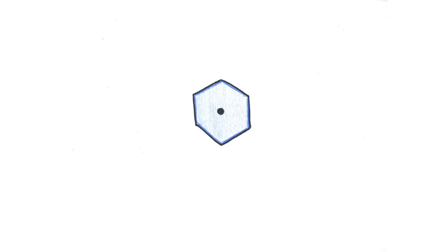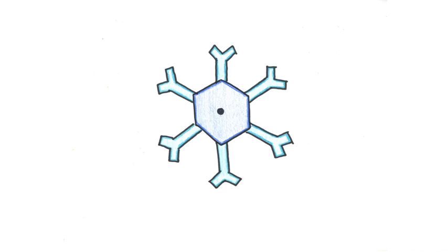This creates a seed crystal and as the tiny ice crystal falls, more water vapor freezes onto the primary structure, building new, more intricate crystals. Those new crystals will form the six arms of the snowflake.